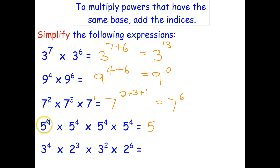This one here, I've got 5 to the 4th times 5 to the 4th times 5 to the 4th times 5 to the 4th. So that's just going to be 4 plus 4 plus 4 plus 4. I could have written that, of course, as 4 times 4, because that's what multiply means. I've got 4 fours. And that's going to be 5 to the power of 16.